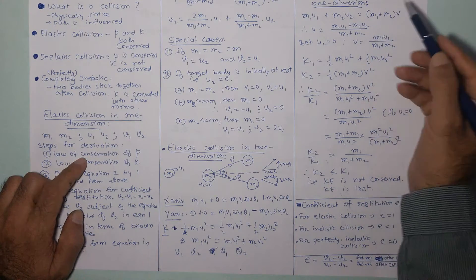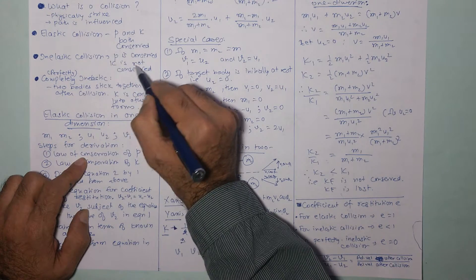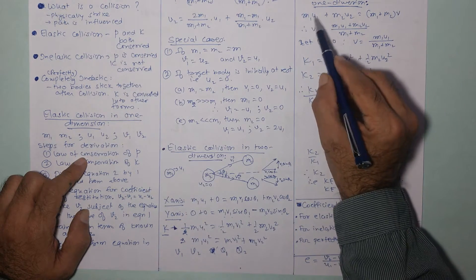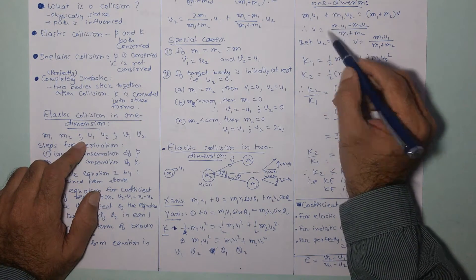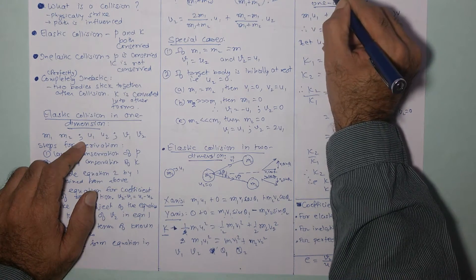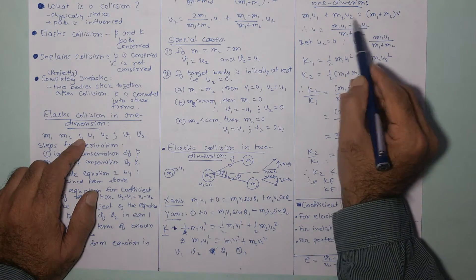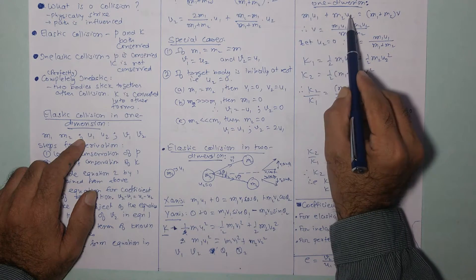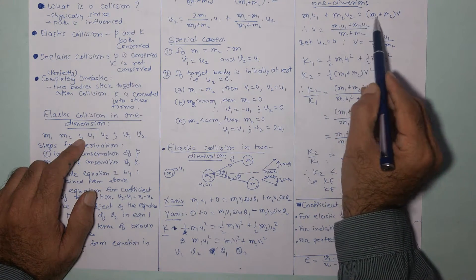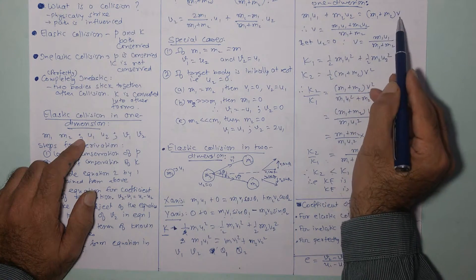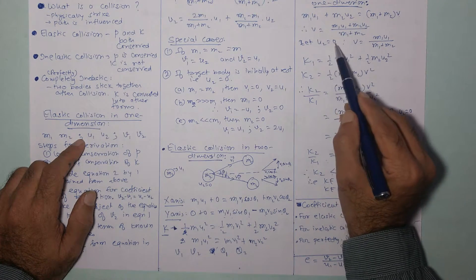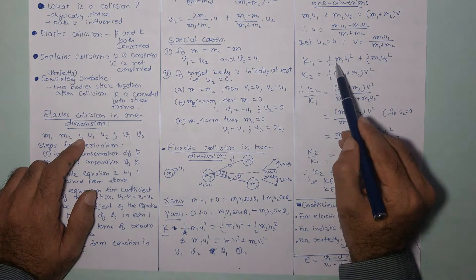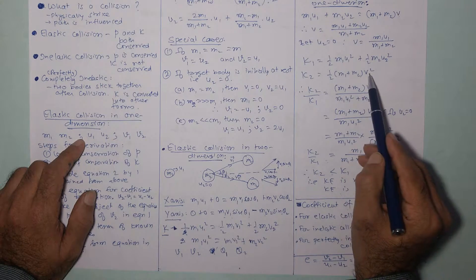Inelastic collision in one dimension: for a perfectly inelastic collision, the two bodies stick together and move with common velocity V. Momentum is conserved: M1·U1 + M2·U2 = (M1 + M2)·V, giving V = (M1·U1 + M2·U2) / (M1 + M2). If U2 = 0, this simplifies further. Kinetic energy initially is ½M1·U1² + ½M2·U2², and finally ½(M1 + M2)·V².